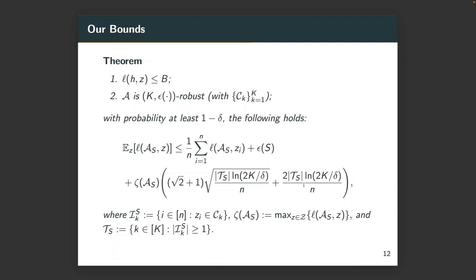Now, let us formally introduce our main results. Under exactly the same condition as Xu and Mannor's paper, where we assume the loss is bounded by B and the algorithm A is K-epsilon robust, we have the following results. The first two terms are the same as the one in the theorem of Xu's paper. Here, T_s are the indices of those partitions with non-zero data points. Also, I want to remark, even with zero data points in that partition, the underlying distribution of the data can still be non-zero in that partition. In that case, Xu's bounds still need to take the partition into account, but our bounds do not.